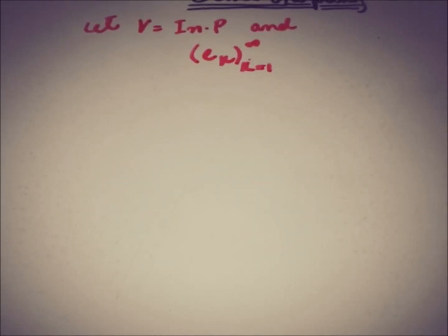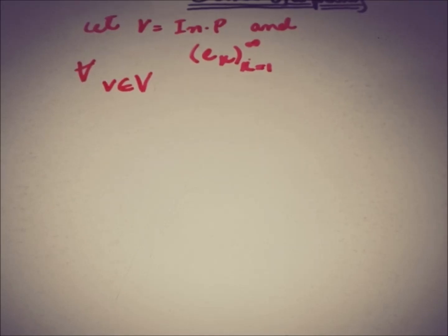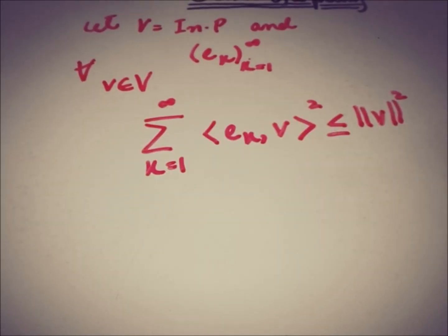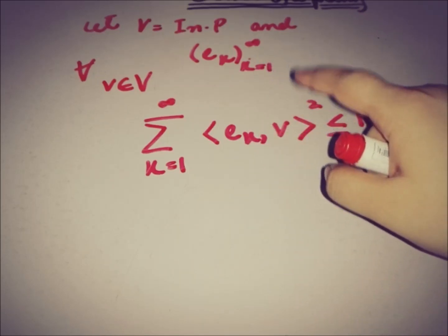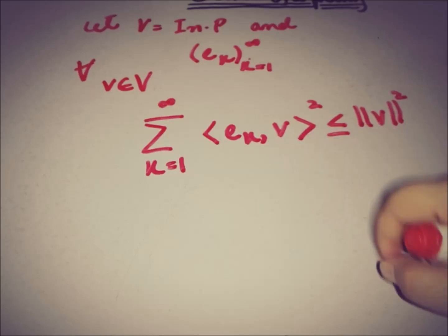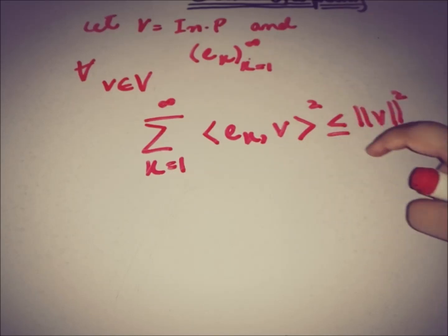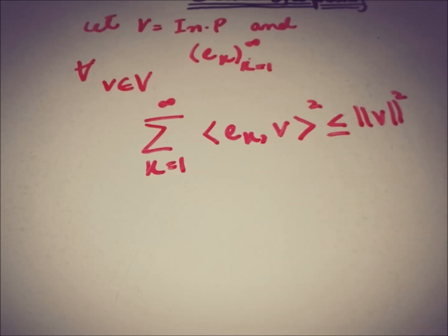Let V be an inner product space and let {e_k}, k from 1 to infinity, be an orthonormal sequence. For all elements v of the inner product space, Bessel's inequality states that the summation of the squared inner products ⟨e_k, v⟩ is less than or equal to the norm of v squared. This is true for all elements of the inner product space. This is the statement — now let's start the proof.